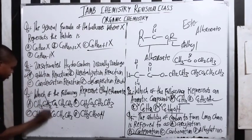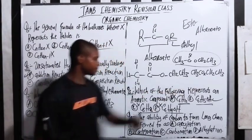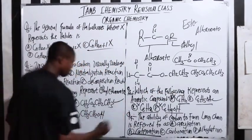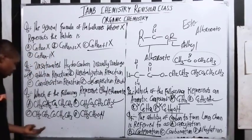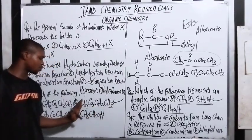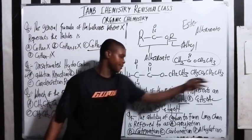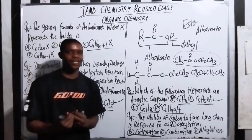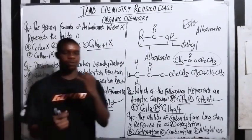The correct answer is B. This is the correct option — it has the right carbon count (one, two, three) and matches the ester structure. So B is the correct option for question seven. These are the kinds of questions you should expect to see in your JAMB exam when it comes to organic chemistry.